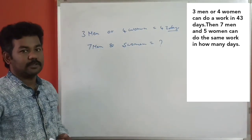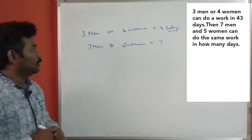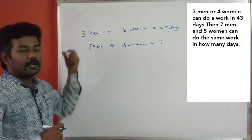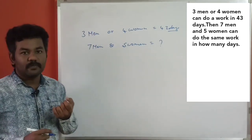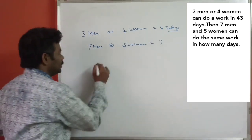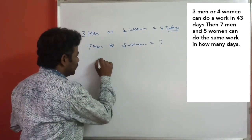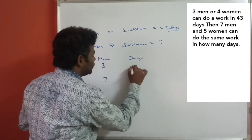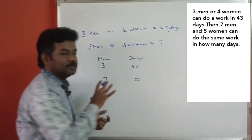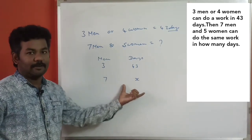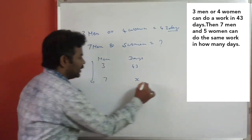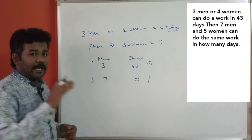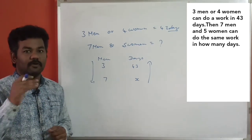This is a chain rule question. We have to solve the basic approach: 3 men and 7 men. The number of men is increased, so the number of days will decrease. The basic approach: if we understand, when the number of men is increased, the days decrease.